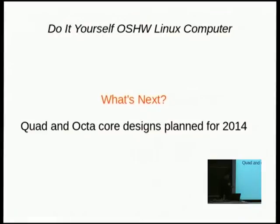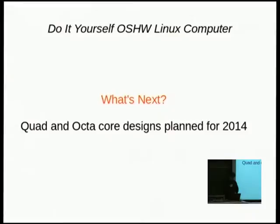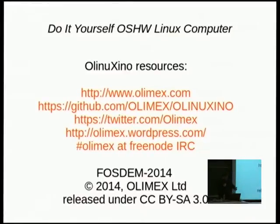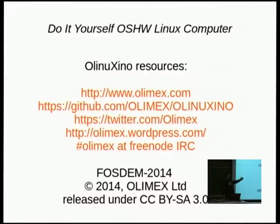What's next? This year, Allwinner is releasing an octa-core device with eight cores, and we have an almost-ready quad-core device. All resources for the project are on GitHub — when you go there, you can see the CAD files, how to build Linux, how to build Android, and everything you need to build your own computer based on our CAD files.